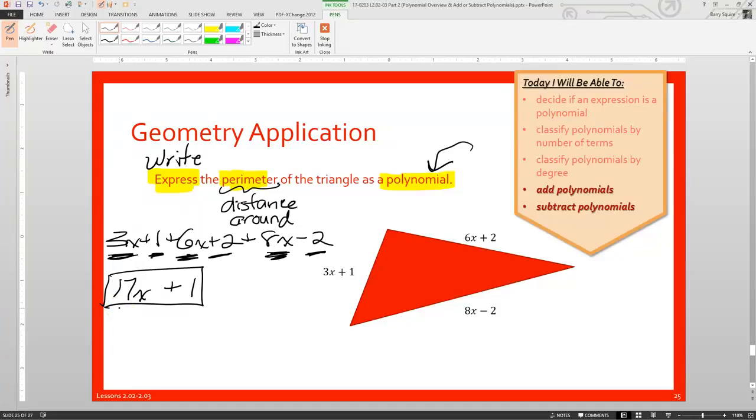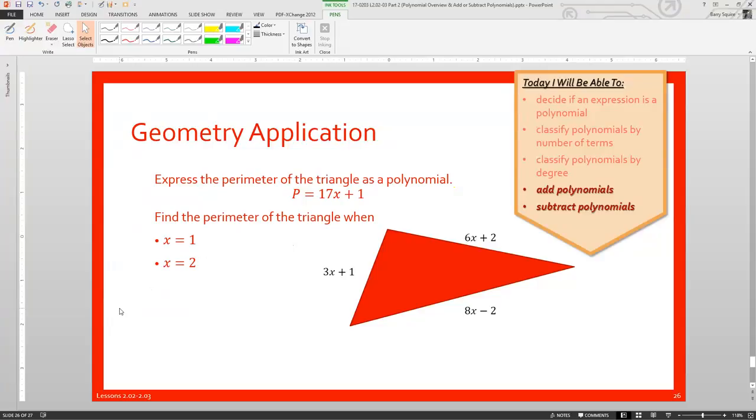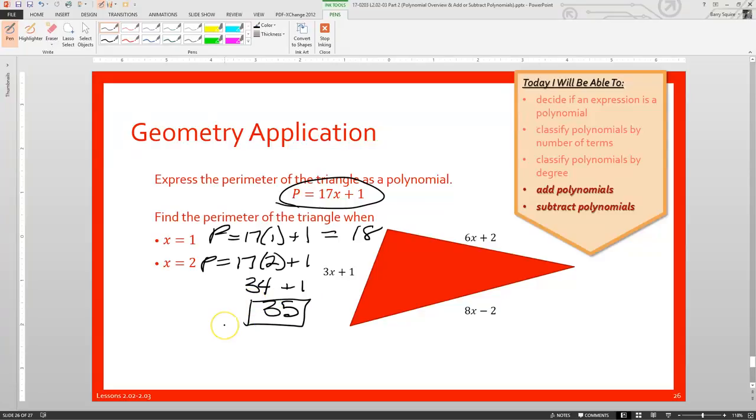Well that's all well and good, but we don't know what x is, so it's kind of meaningless at this point. But what if someone told us that x is 1? Well, now we're just in the case of what I call plug and play. If x is 1, we put in 1 for the number x. So I'll say our perimeter is 17 times 1 plus 1, which is going to be 18. What if x is 2? Well, we'll substitute 2 for x instead. 17 times 2 is 34 plus 1, so that's 35. So our perimeter is going to change depending on what the value of x is.